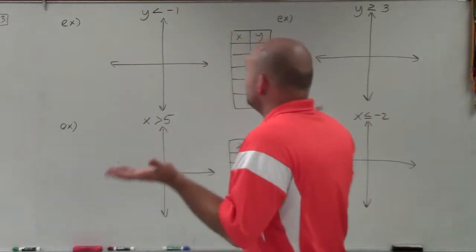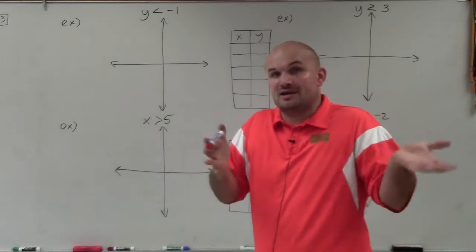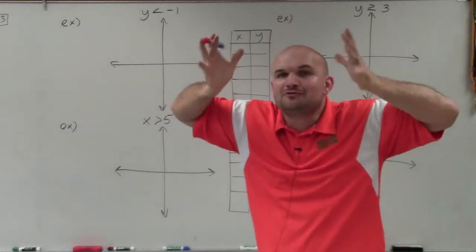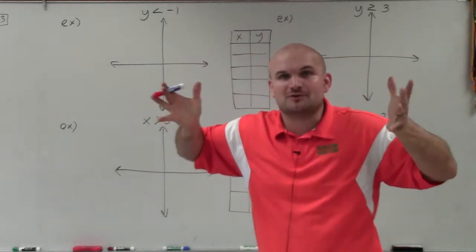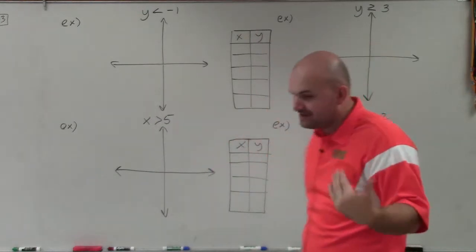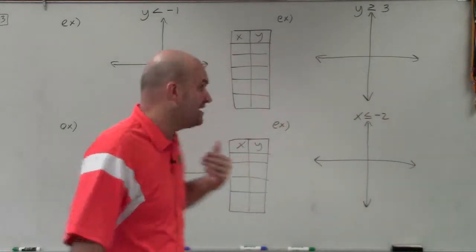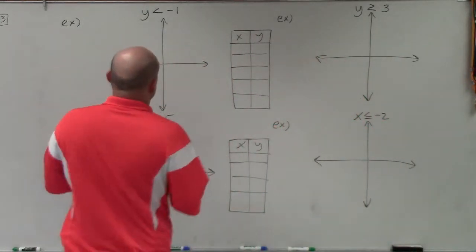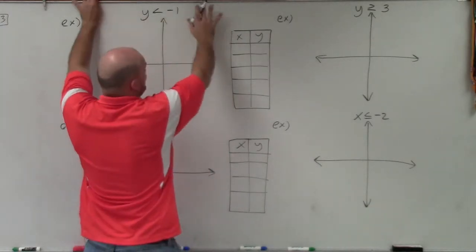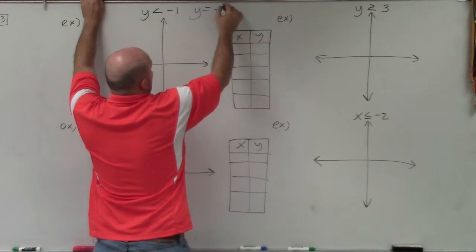I basically just have x and y with less than, greater than, less than or equal to, or greater than or equal to a number. So how do you graph those? It's one of the more common problems students have. The best thing is to forget about the inequality for a second and just think about it as an equation — y equals negative 1.